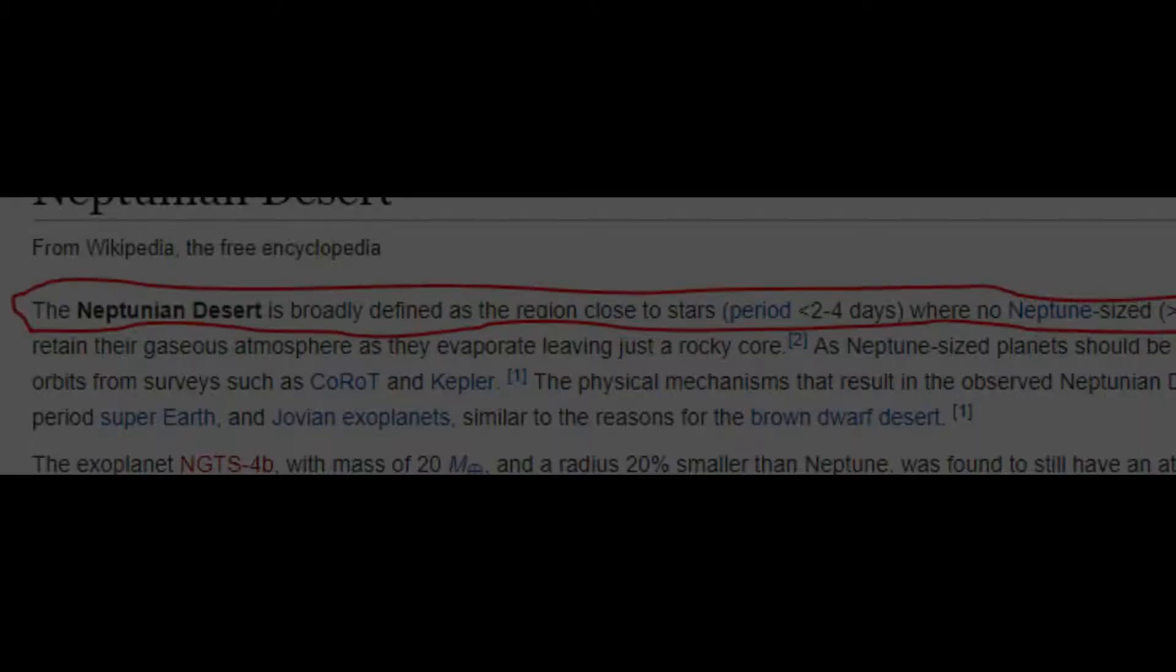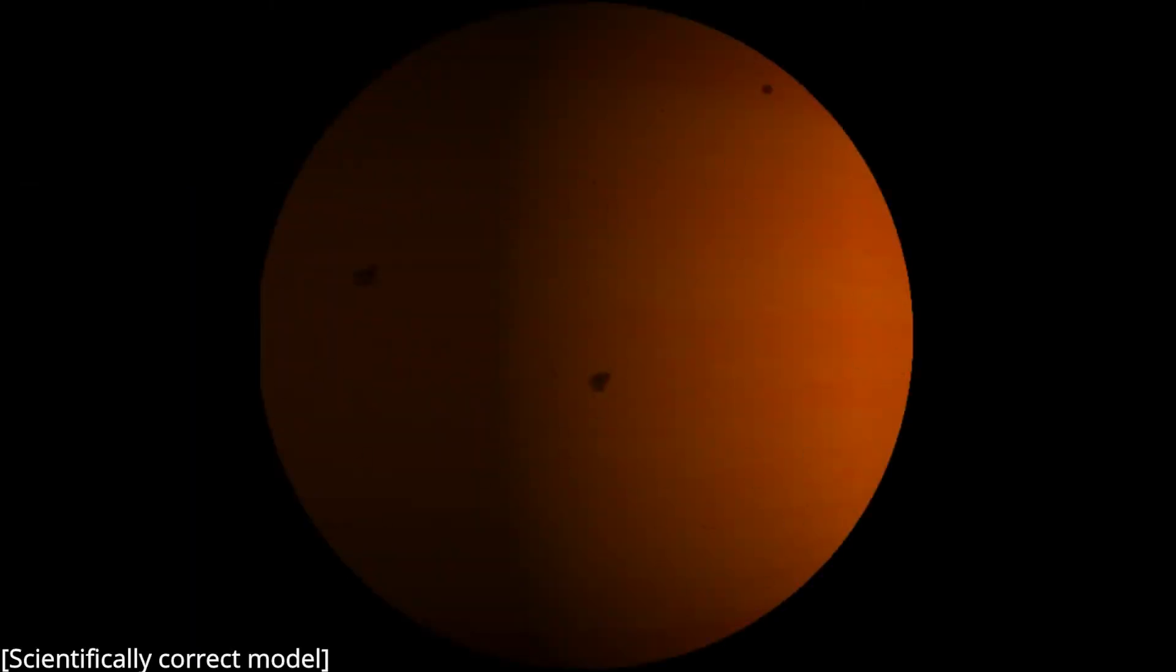What would you call a planet that contradicts the Neptunian desert's law? The Forbidden Planet, also known as the NGTS-4b.